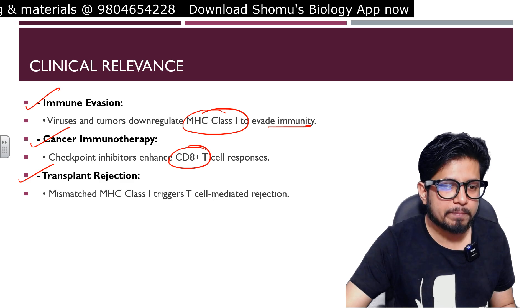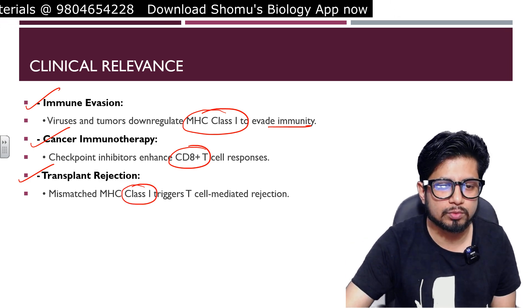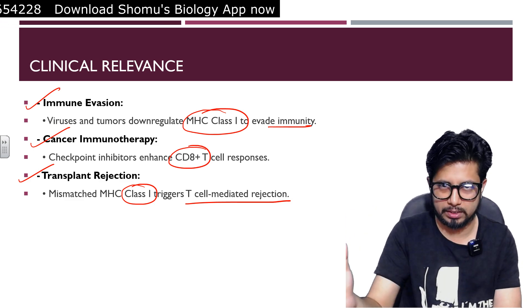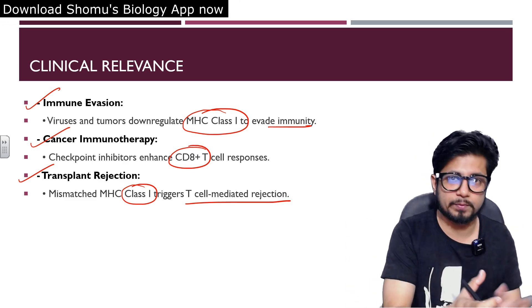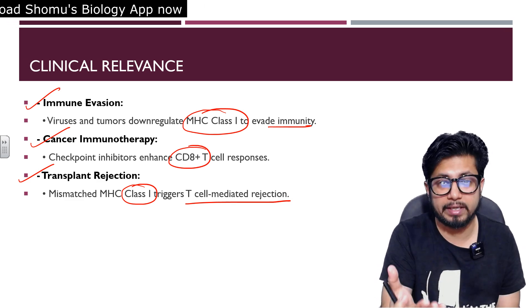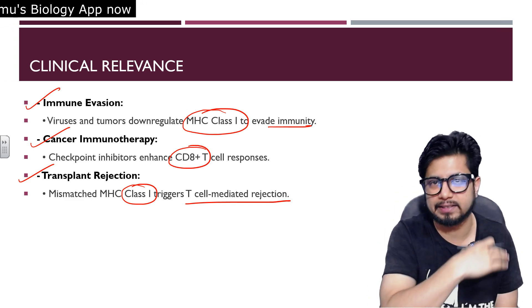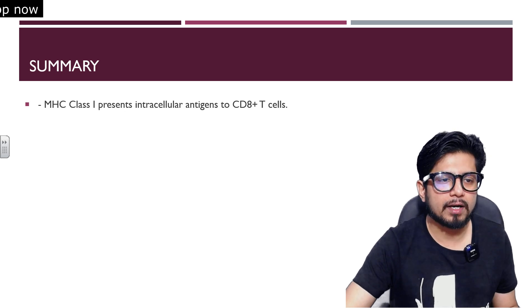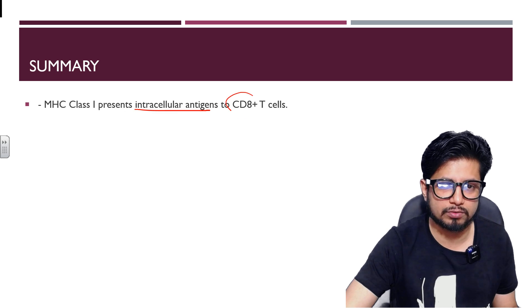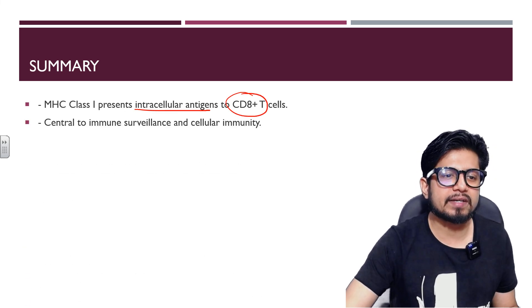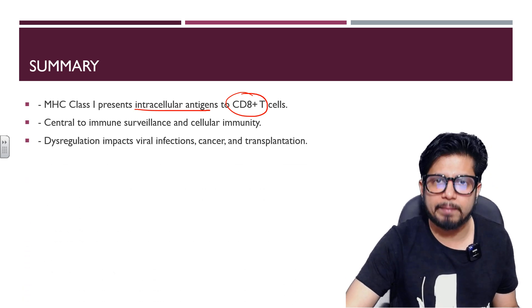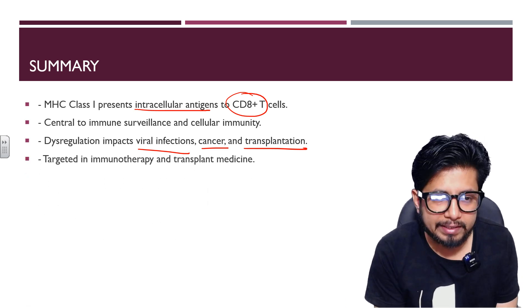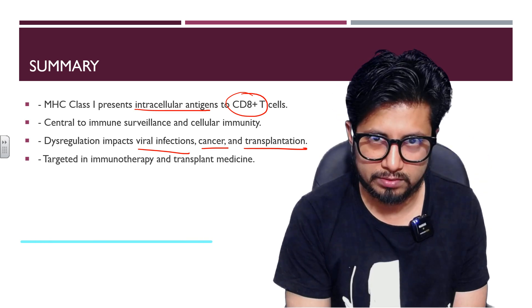Third, transplant rejection — a mismatch in MHC class 1 between donor and recipient leads to T cell-mediated rejection. If the MHC class 1 doesn't match between donor graft and recipient, T cells will recognize the graft as foreign and initiate tissue destruction. In summary, MHC class 1 presents intracellular (endogenous) antigens to CD8+ cytotoxic T cells, is central to immune surveillance and cellular immunity, and its dysregulation impacts viral infection, cancer, and transplantation.